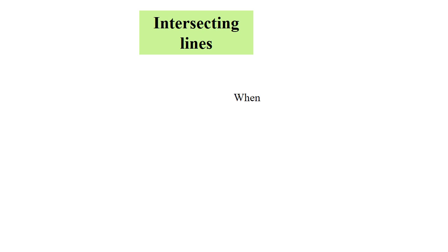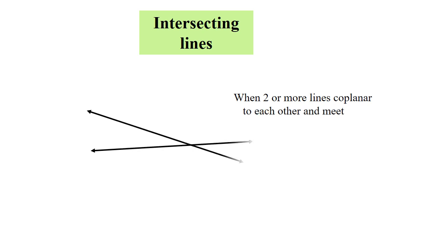Let's talk about intersecting lines. When two or more coplanar lines meet at a common point, those lines are called intersecting lines. Line M and line N are intersecting at point O. Therefore, point O is called the point of intersection.